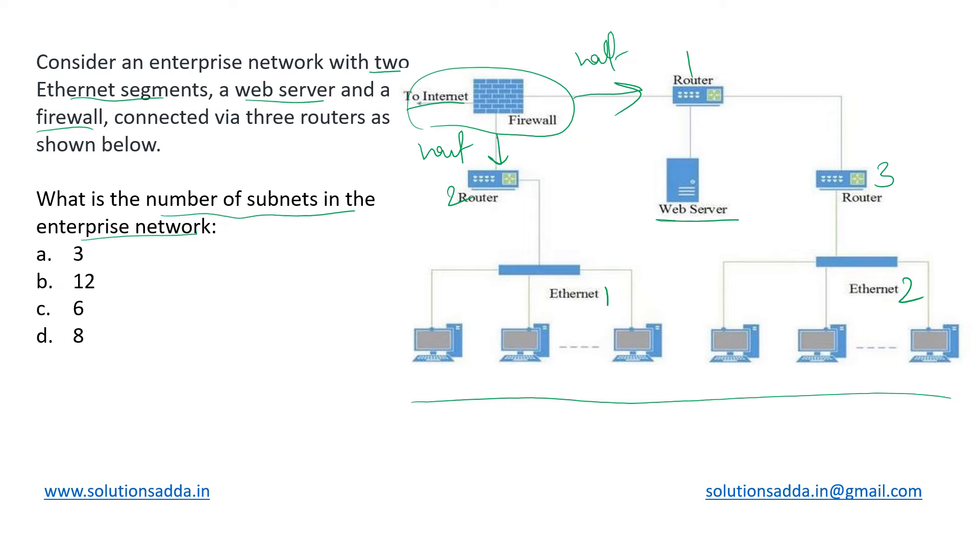So at this point these two subnets got created and further on this router 2 is going through this network in this ethernet. So basically this ethernet is forming one subnet. Let us call that subnet 1 and router 2 has created this particular subnet.